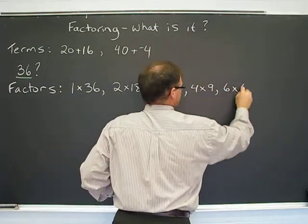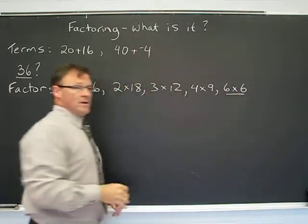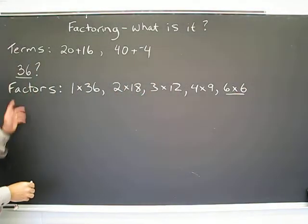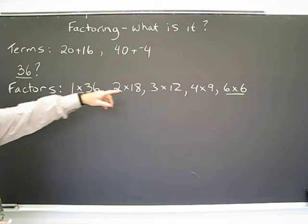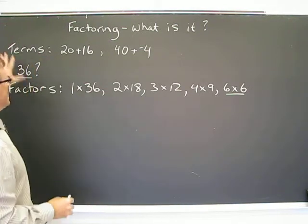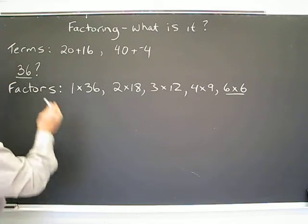And then you have 6 times 6, which by the way, that would be a perfect square. 36 can be square rooted because the two factors are the same.